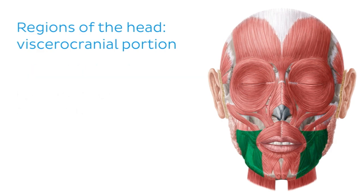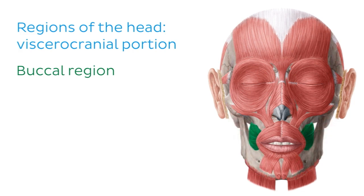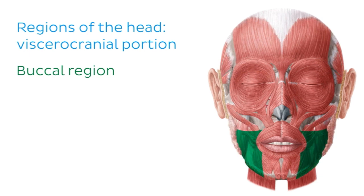The third of the five bilateral regions of the face is the buccal region. This is the region of the face situated above the buccinator muscle, which we can see more clearly when surrounding soft tissues are removed — highlighted here in green. The buccal region essentially refers to the area of the cheeks.